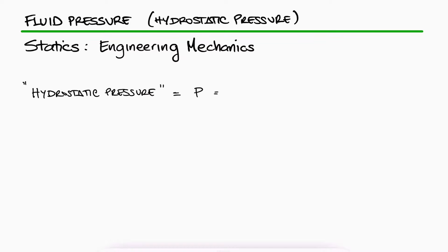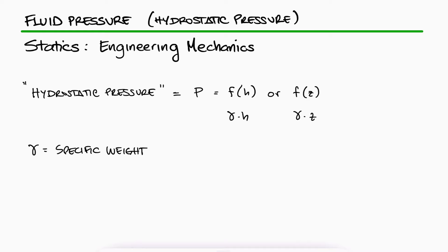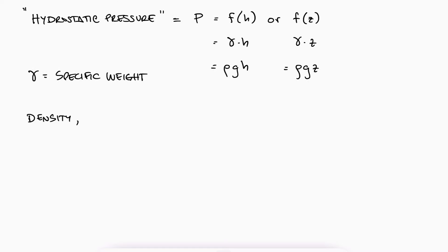Hydrostatic pressure increases linearly with depth. The pressure as a function of depth can be written as gamma times h, and since gamma is the specific weight of the fluid, we can also write the function as rho gh. The units for the density rho are mass over volume, which can be pounds per cubic foot or kilograms per cubic meter, for example.